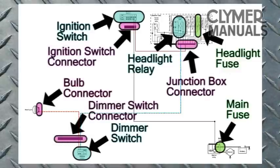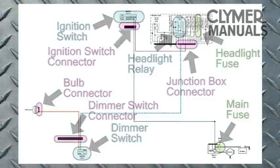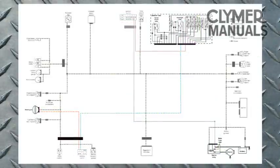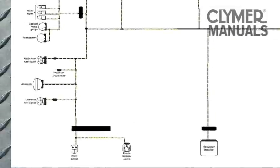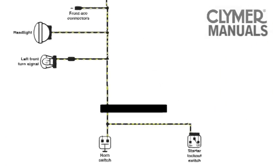And we have connectors at the bulb, dimmer switch, junction box, and ignition switch to consider. Next up is a look at the ground side of the circuit. By tracing the black-yellow wire, we quickly see that the headlight shares a common ground with all the other consumers.